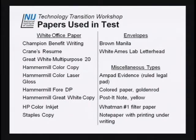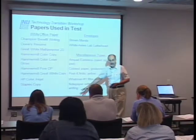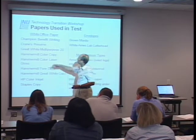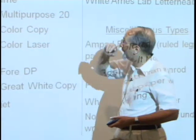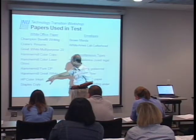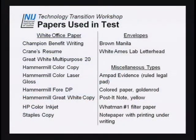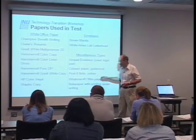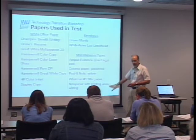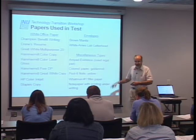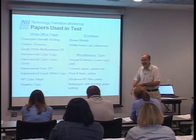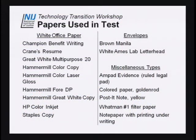Here are the 16 different papers we used: ten are plain white office papers — a thick resume-style paper, ordinary copy paper, a gloss paper like you'd put a photograph on — a variety of white office papers. A couple of envelopes: a brown manila one and a white letterhead-style envelope. And some miscellaneous kinds: legal pad, colored paper, a yellow Post-it note, filter paper, and note paper with printing on it — like smiling snowmen or flowers — where the writing is then on top of that printed ink.